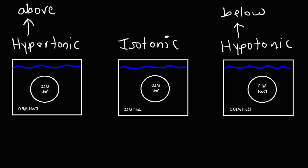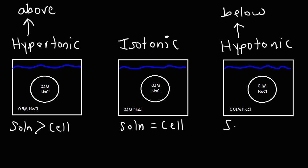For a hypertonic solution, the concentration of the solution outside the cell is greater than the concentration of the solution inside the cell. For an isotonic solution, the concentration of the solution and the cell concentration are the same. For a hypotonic solution, the concentration of the solution outside the cell is less than the concentration of the solution inside the cell.